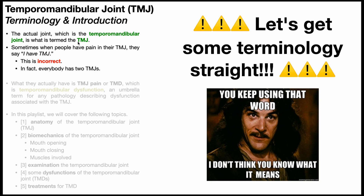Sometimes when people have jaw pain, they say 'I have TMJ.' This is incorrect because everybody has two TMJs — one on the left and one on the right. What they actually mean is they have TMJ pain, or they have TMD, which stands for temporomandibular dysfunction.